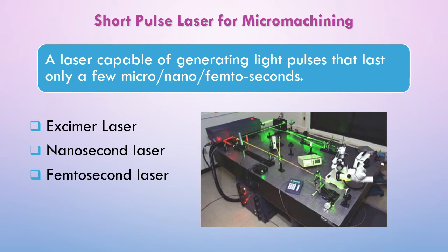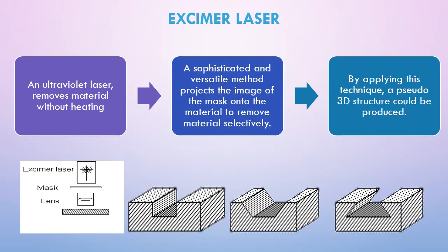One solution for the HAZ issue is using short pulse lasers for micromachining. A short pulse laser is capable of generating light pulses that last only a few micro-, nano-, or femtoseconds. There are three types of short pulse laser for micromachining: excimer laser, nanosecond laser, and femtosecond laser. The excimer laser uses ultraviolet light and removes material without a heating process. It is a sophisticated and versatile method that projects the image of a mask on the material to remove selective material, and a pseudo-3D structure can be produced.